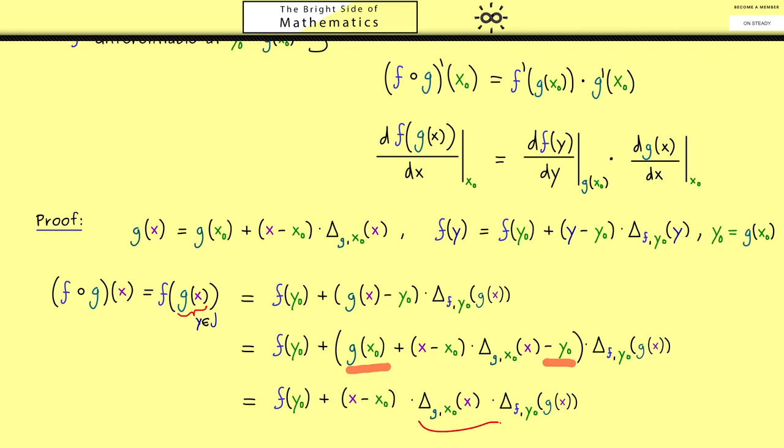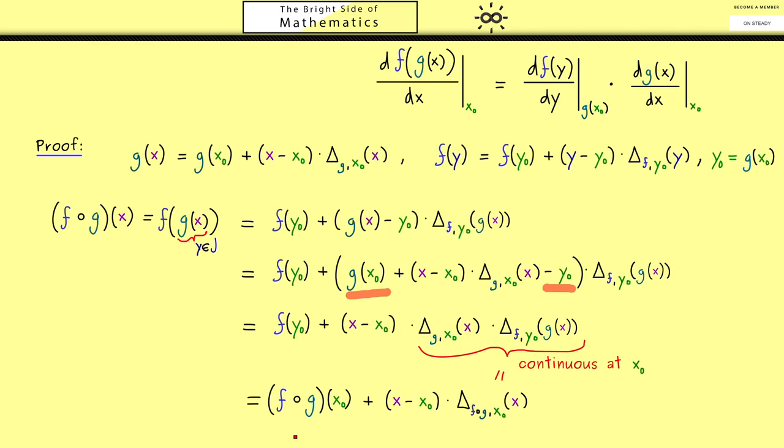More concretely here we have a well defined function that is continuous at the point x₀. And as always the limit x to x₀ will give us the derivative. Now if we want we can give the function the correct name and then you see this is the linearization of the composition.